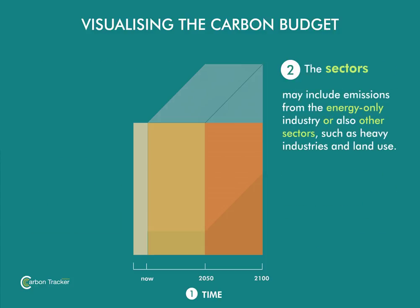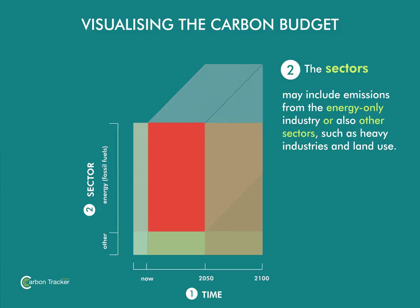Once we have determined our timescales, we must outline which greenhouse gas-emitting sectors we are interested in. Like the International Energy Agency, Carbon Tracker is interested in the energy sector, which is the largest single source of global anthropogenic greenhouse gas emissions. This means that budgets used in our work exclude emissions from sectors such as the heavy industries or land use and forestry.